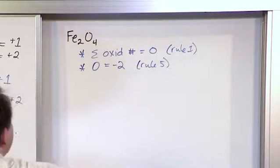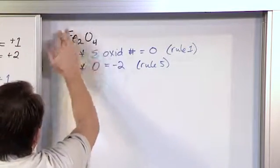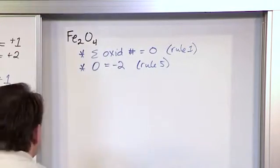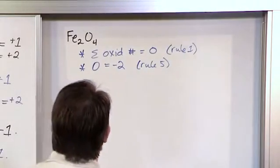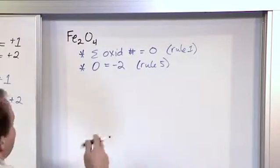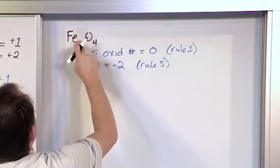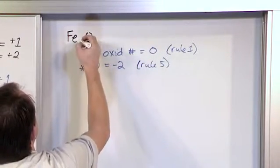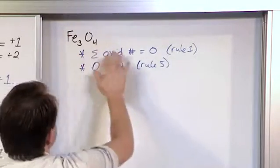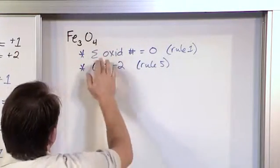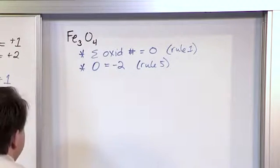Since we have one of these oxidation numbers and we know what the sum must equal, we don't even need to look at this list anymore because we have enough information to find the answer. Now one thing I'm noticing, everything is correct, but when I wrote my problem down, this is really supposed to be Fe₃O₄. So it doesn't really change anything. The sum of the oxidation numbers is still zero, and the oxidation number on oxygen is still negative 2.